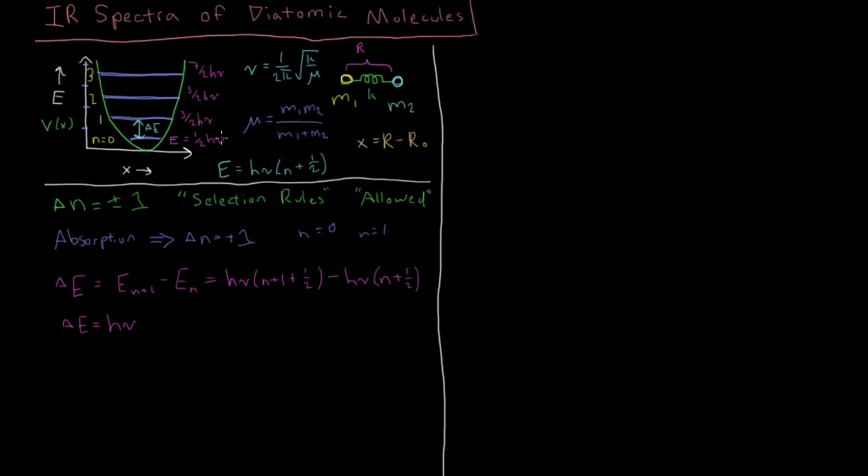So this frequency is really going to be the determining factor in what our energy spacings are and what bands we observe on whatever IR spectrum we measure. So this nu, which we can call nu observed if we like, is just going to be equal to the same thing we have up here, this one over two pi square root of k over mu. So that will be the frequency we observe on some IR spectrum.